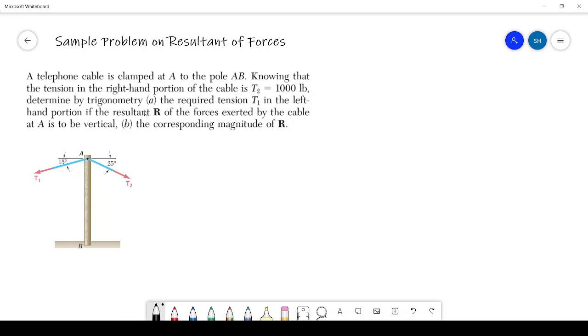Determine by geometry the required tension T1. So we have to find this tension in the left hand portion if the resultant R of the forces exerted by the cable at A is to be vertical. So the resultant force because of these tension forces on the pole should be vertical. And we have to find the corresponding magnitude of R.